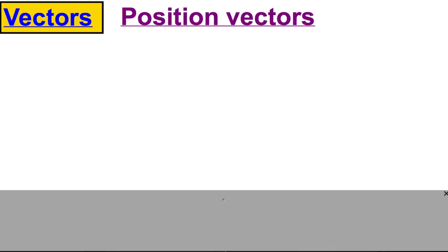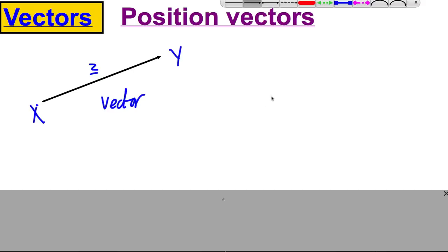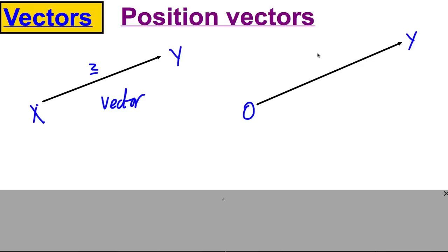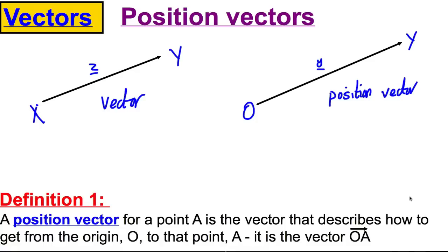Just to make that absolutely clear: a normal vector gets you between any two points X and Y in space. But a position vector is something very special — one of the ends is the origin. So the vector to get from the origin to point Y, which we usually call little y, is the position vector. The formal definition: a position vector for point A is the vector that describes how to get from the origin O to that point A — it is the vector OA.